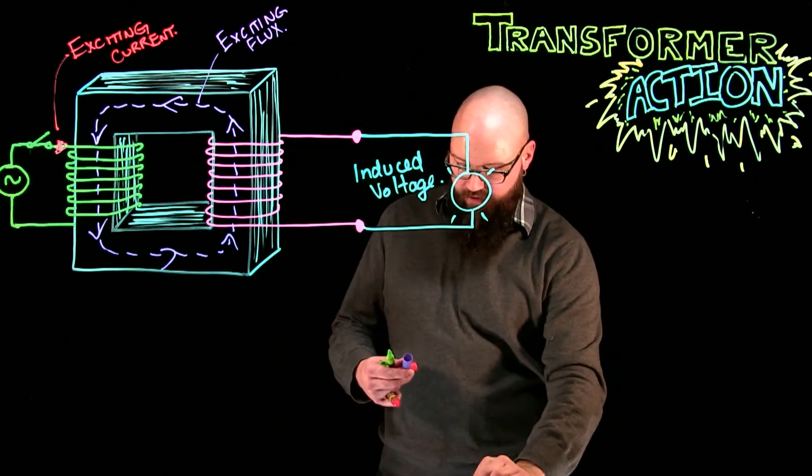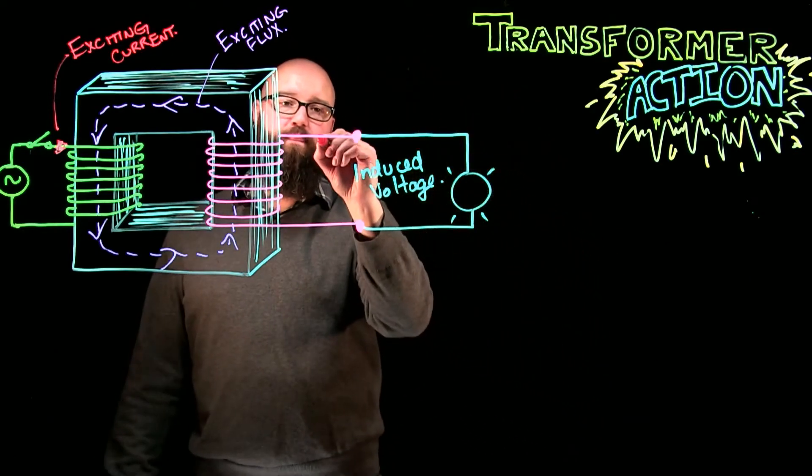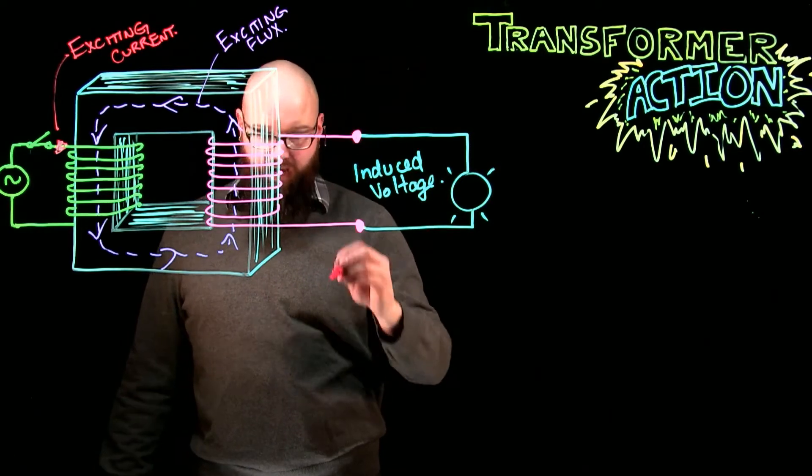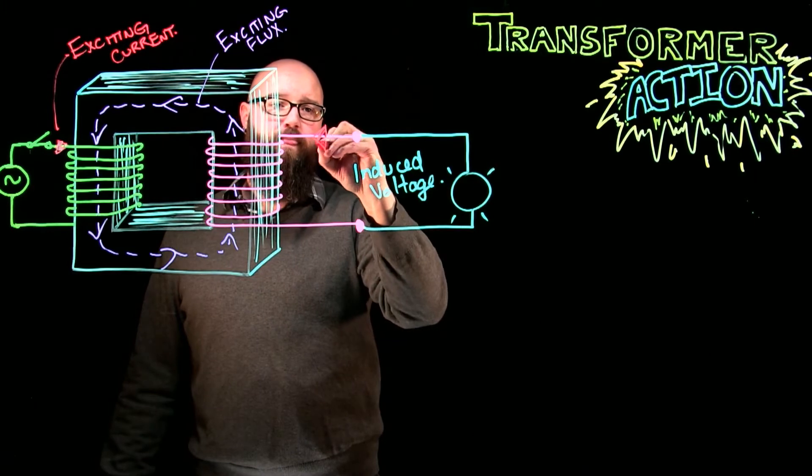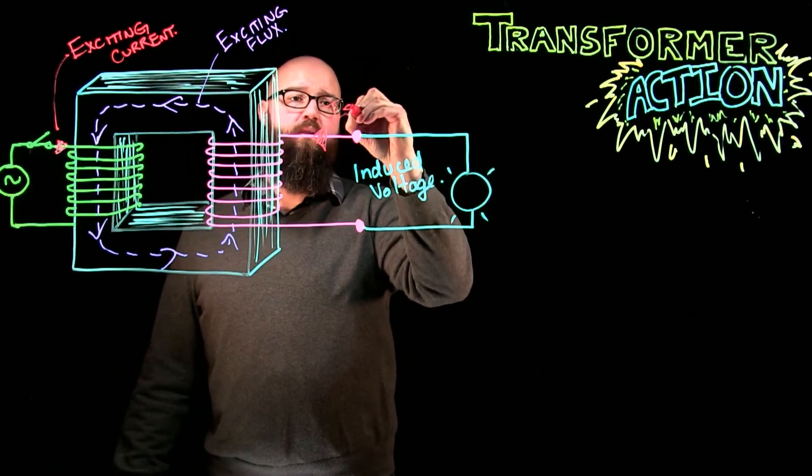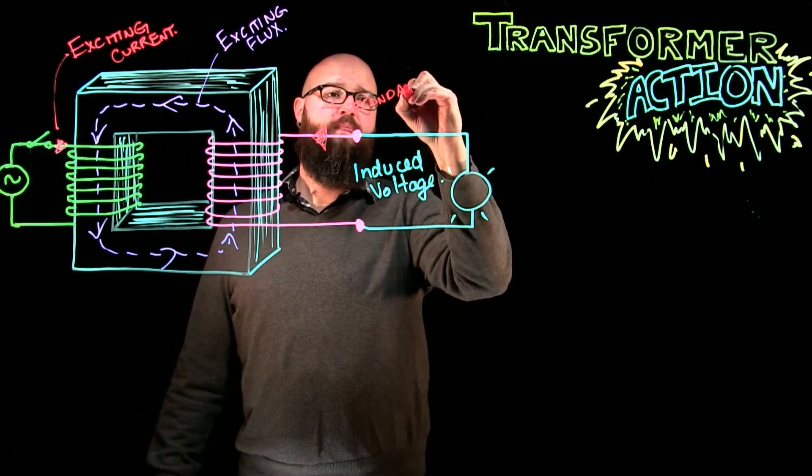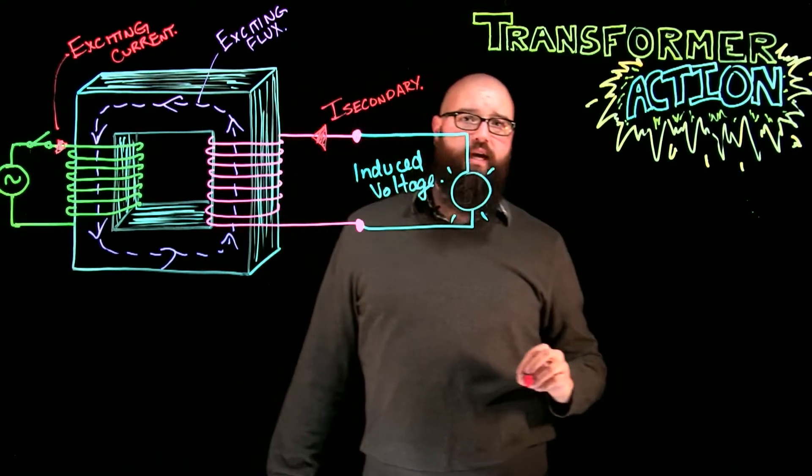And what immediately starts to happen is we get a current flow on the secondary. And we'll call that I secondary.